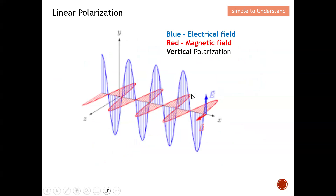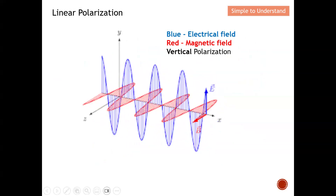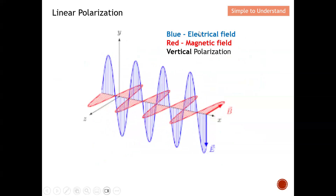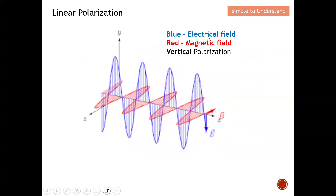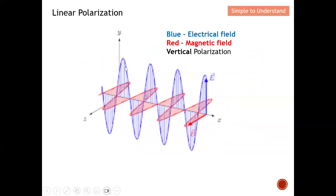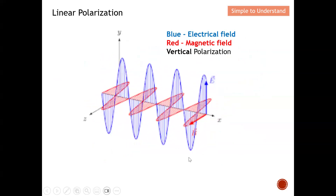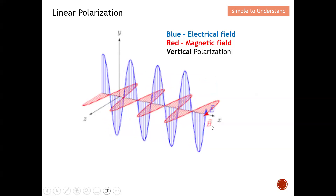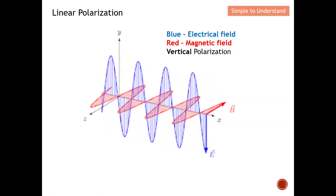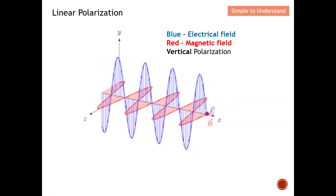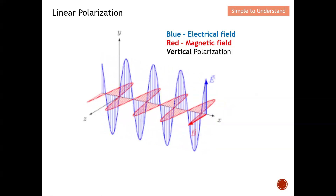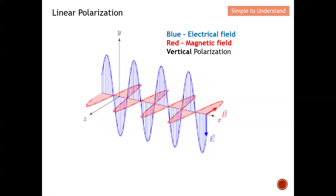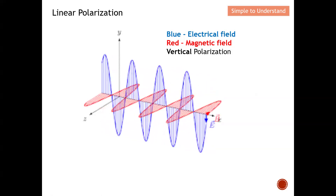Here is a simple animation to help you fully understand linear polarisation. The blue one is the electrical field and the red one is the magnetic field. Imagine this is the ground of the Earth. You can clearly see that the E-field is actually on the vertical plane — so this is what we call vertical polarisation. From this animation, you can determine whether it is vertical polarisation or horizontal polarisation based on which plane the E-field lies in.